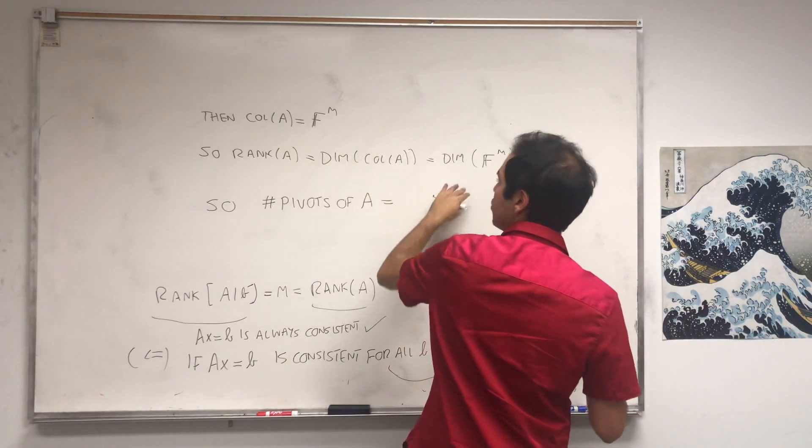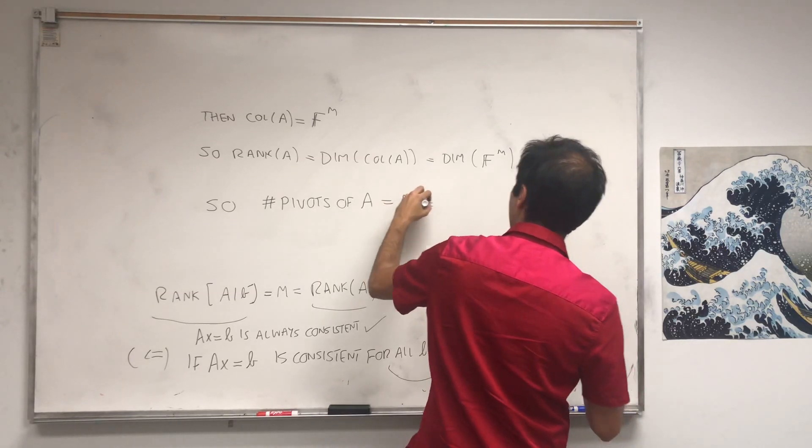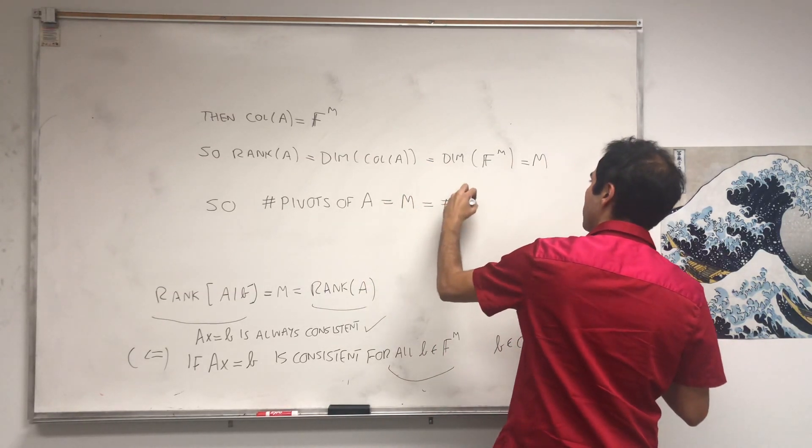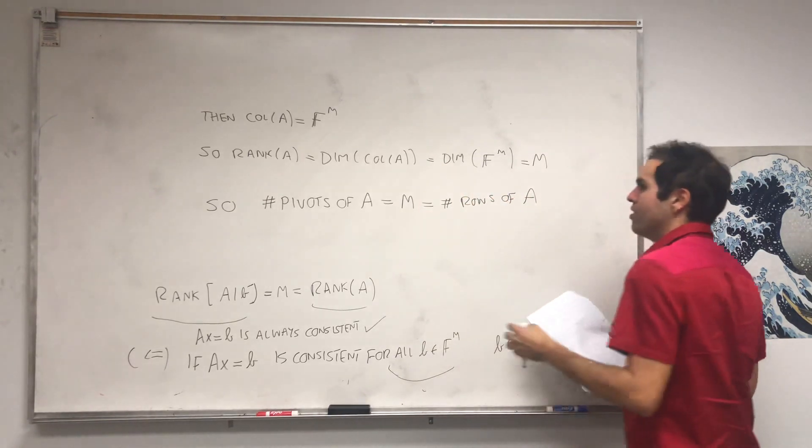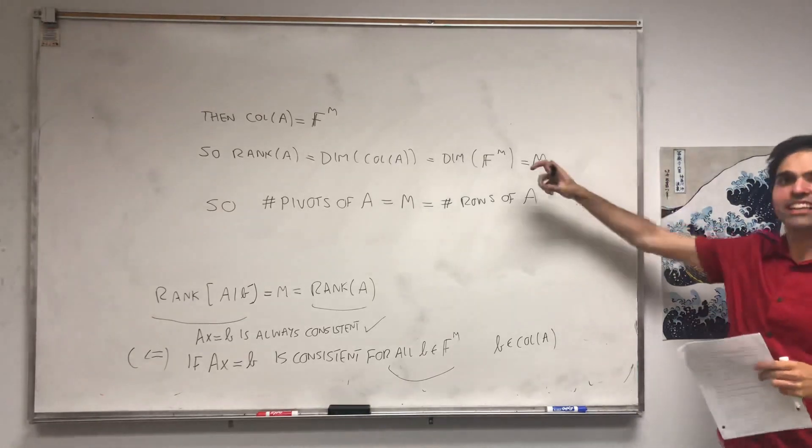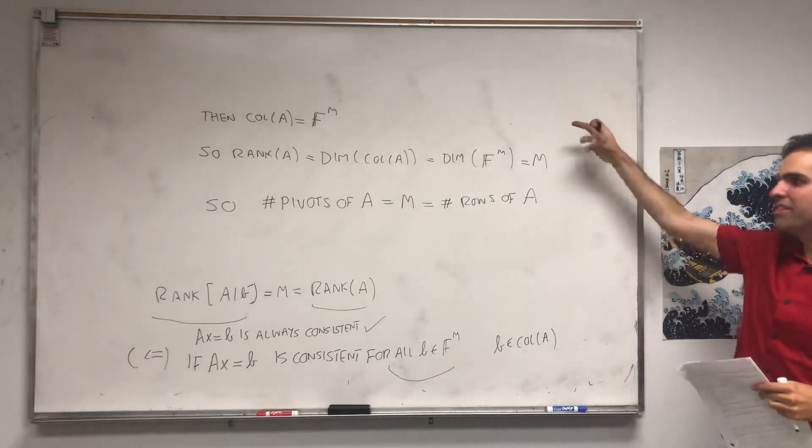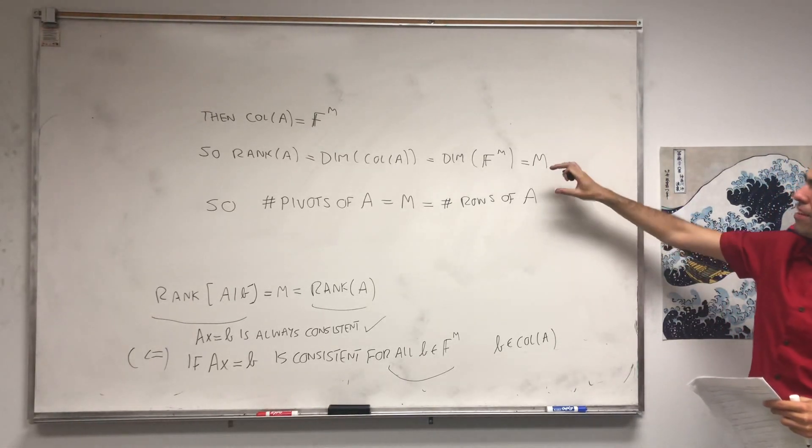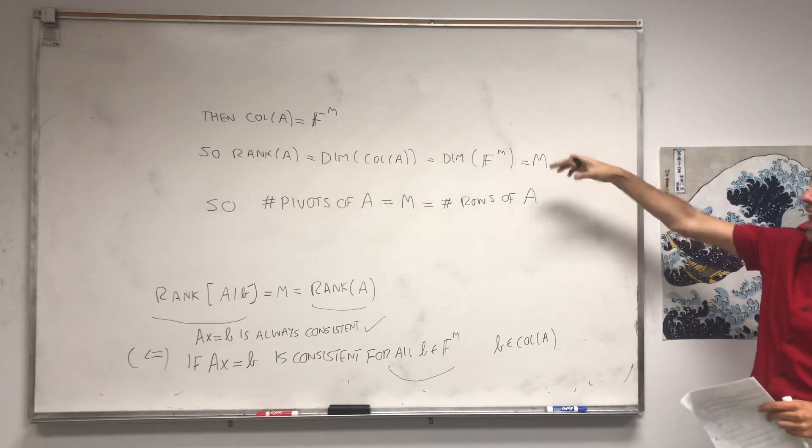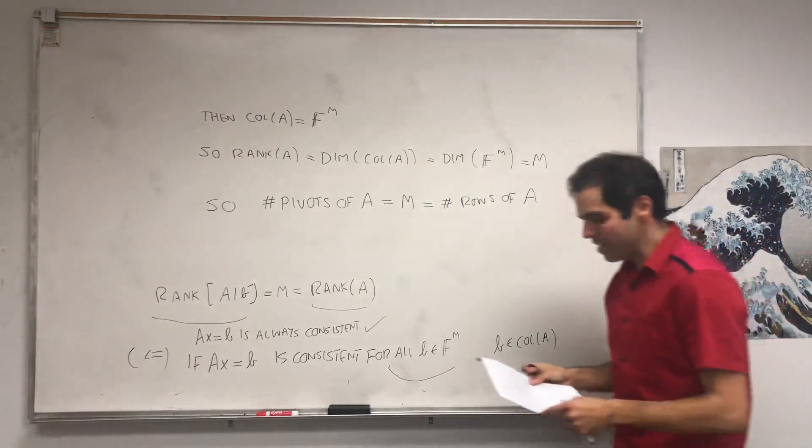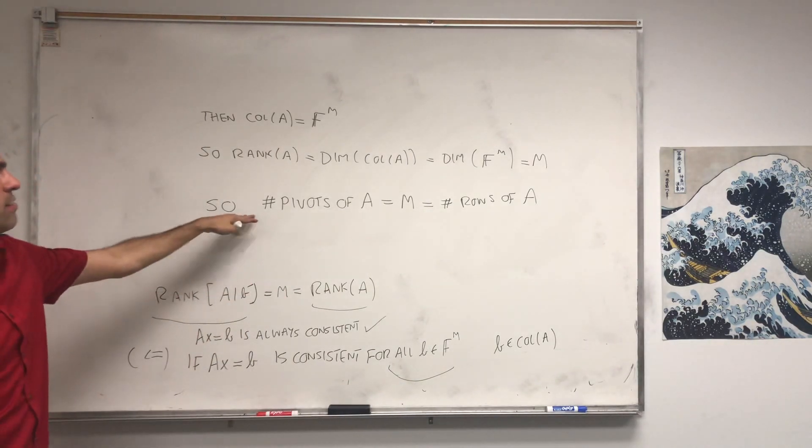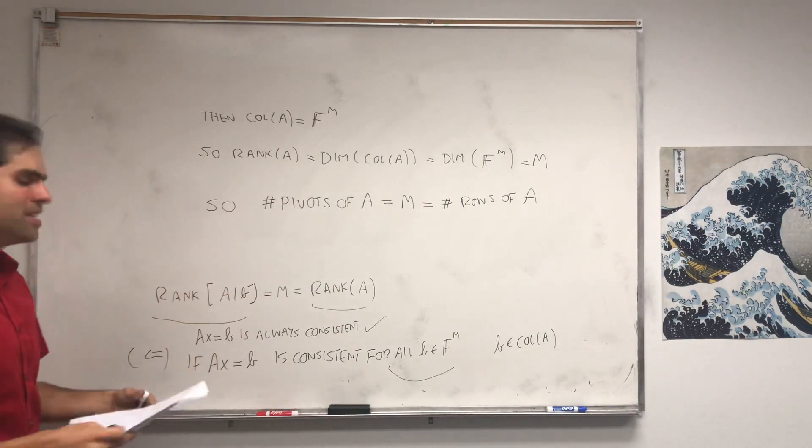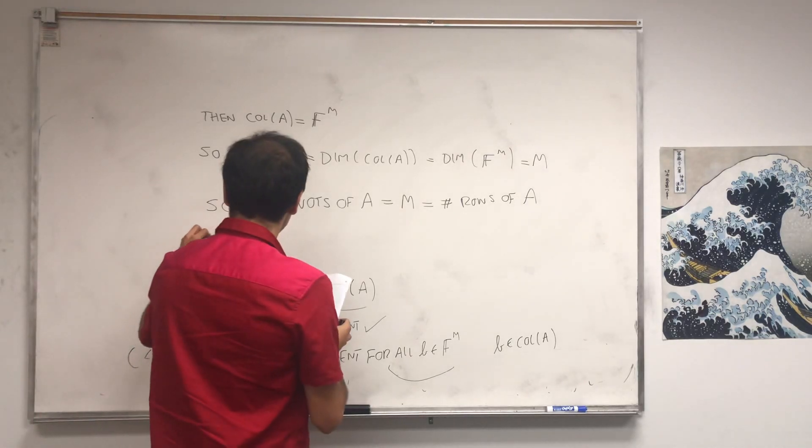Again, rank is the number of pivots, it equals to M, and that equals M was just the number of rows of A. So because there's exactly a pivot in every pivot row, we have to have that A has a pivot in every row. Otherwise, there would be a row of zeros, and then the number of pivots would not be equal to the number of rows.